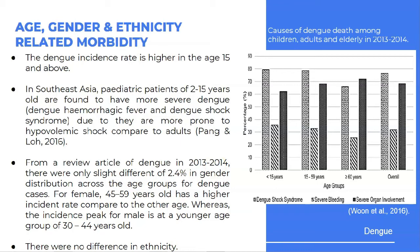The dengue incidence rate is higher in the age of 15 and above, meaning this is primarily an adult disease. However, in Southeast Asia, pediatric patients aged 2 to 15 years old are found to have more severe dengue syndrome such as dengue hemorrhagic fever and dengue shock syndrome, as they are more prone to hypovolemic shock compared to adults. From a review article of dengue in 2013 to 2014, there was only a slight difference of 2.5% in gender distribution. For females, the age group 45 to 55 and 59 years old had a higher incidence rate, whereas for males the higher incidence was at a younger age of 30 to 44 years old. There were no differences across ethnicity.